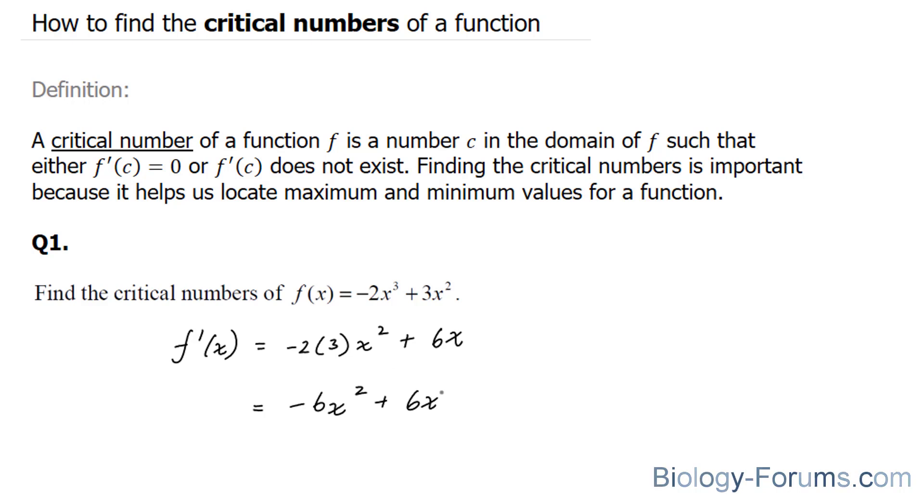The next thing you want to do is find out the domain. And we know that any number that we input into this x and then into this x will output a y value. So the domain for this equation is every number for x. Next, what we'll do is set this function equal to 0. f'(x) = -6x² + 6x, and we're going to set this equal to 0 and then subsequently we'll solve for x.